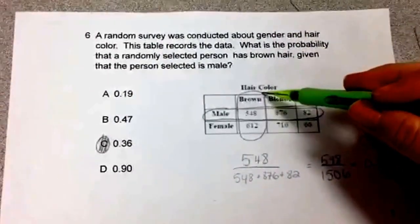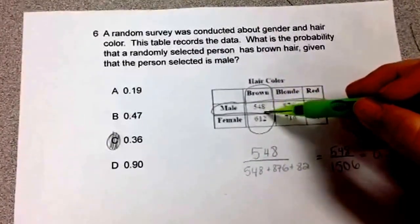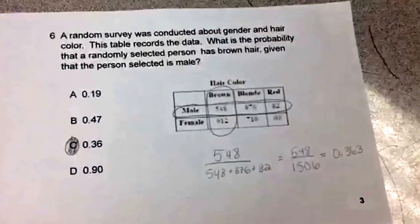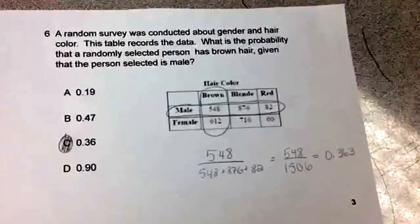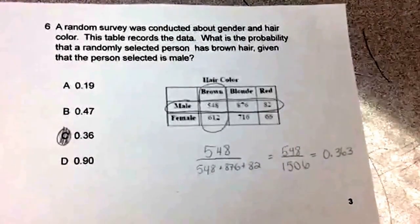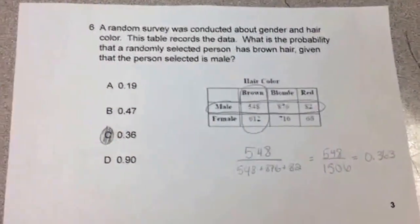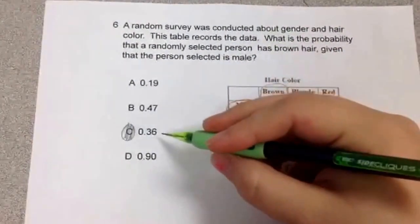As you can see, they did their circling. And you end up with the answer 548, and when you add the total up, you get 1506. So you put that in the calculator as a fraction, and you get 0.363, which you see is one of your answers, so your answer is C.